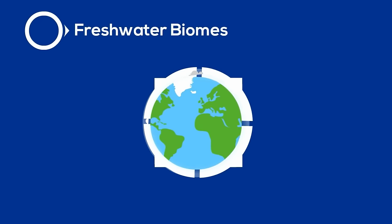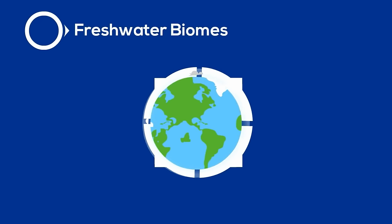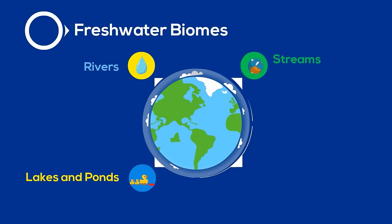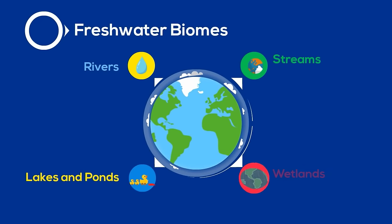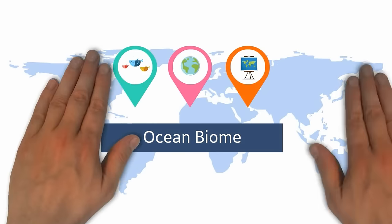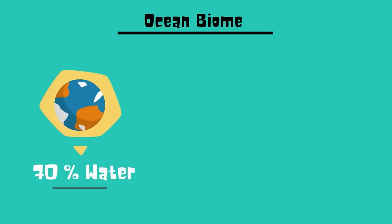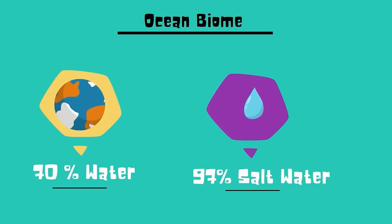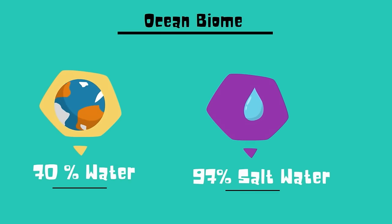So there we go — freshwater biomes: rivers and streams, lakes and ponds, and wetlands. The Earth is roughly 70% water, and 97% of this water is composed of our oceans and seas. Let's take a look at the ocean.